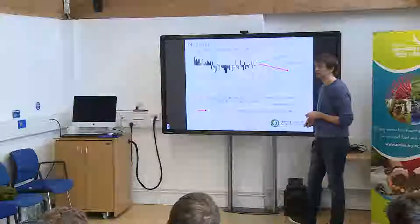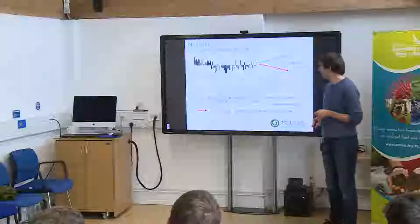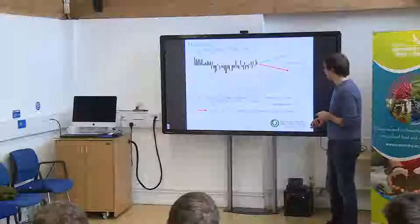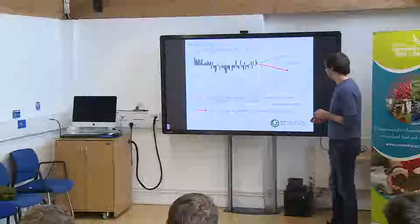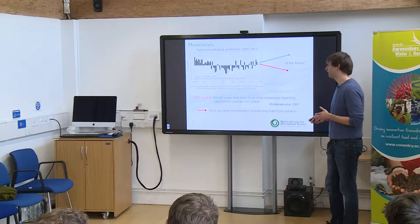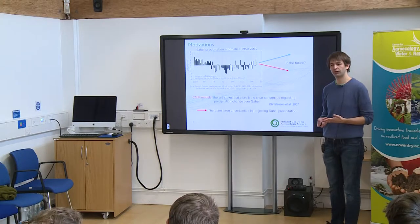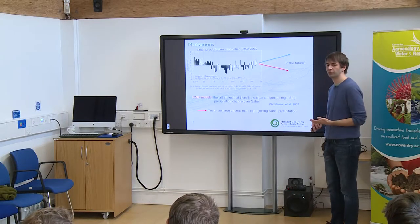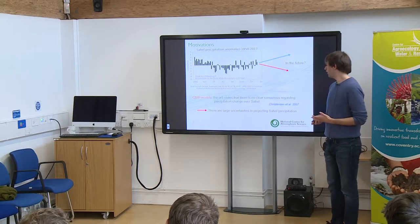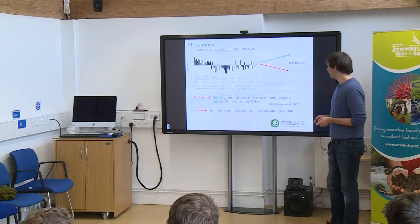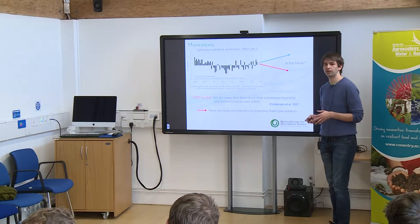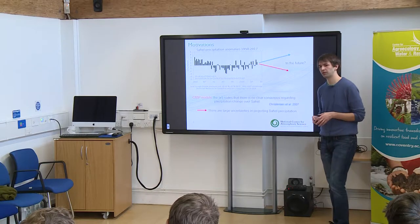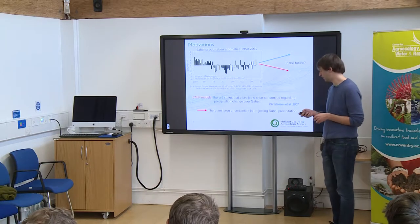To figure out what could happen in the future, we have to use climate models. If we look at the CMIP5 models, the fifth report of the IPCC concluded there is no clear consensus and no conclusion for Sahel precipitation in the future. This is due to the fact that there are too many uncertainties in simulating and predicting precipitation over the Sahel.